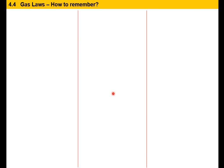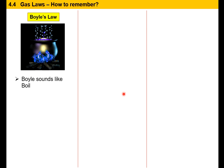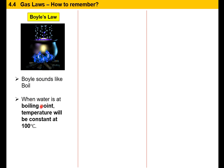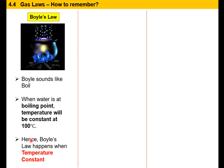These three gas laws — how are we going to remember them? Boyle's Law actually sounds like the word 'boil.' When water is at boiling point, the temperature will be constant at 100 degrees Celsius, as we learned in the previous subtopic. Therefore, Boyle's Law happens when temperature is constant.